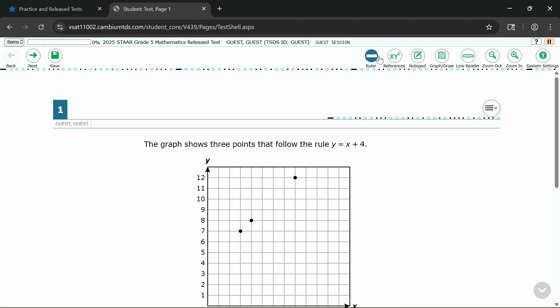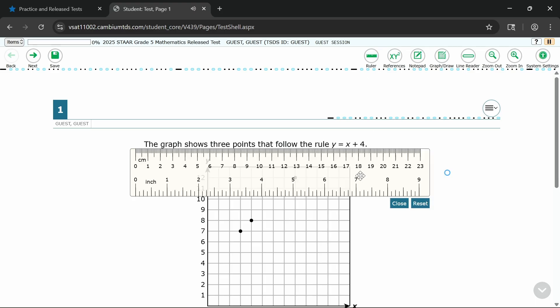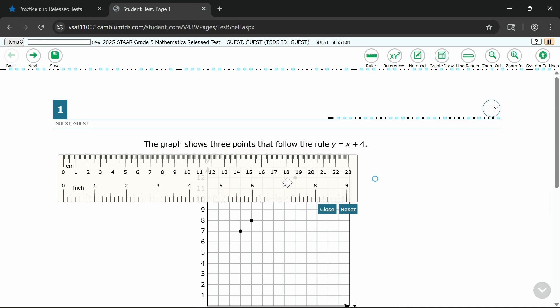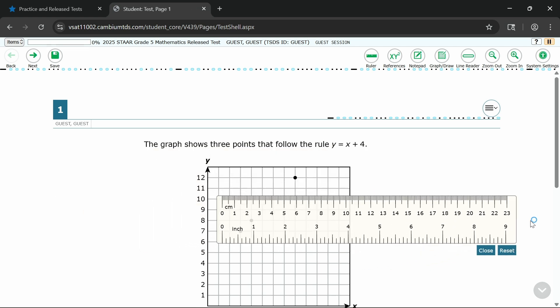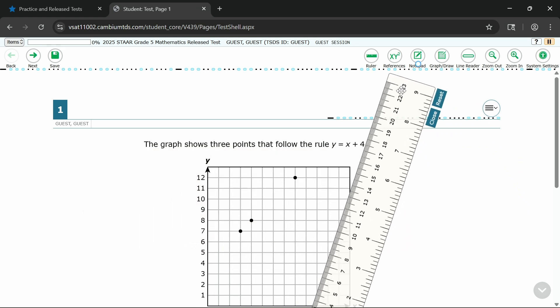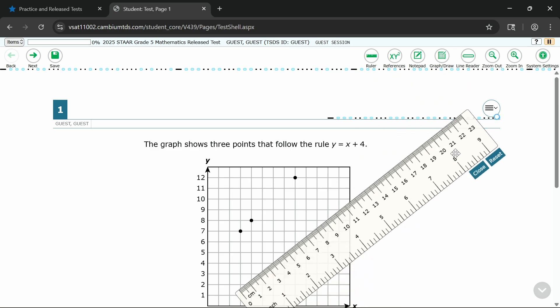First up is the ruler. You can move the ruler around the page. Just hover, click, and drag it where you need it. You can even rotate it by clicking and dragging the blue circle on the right side.